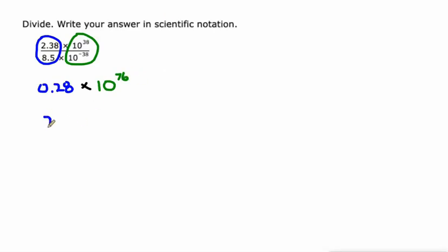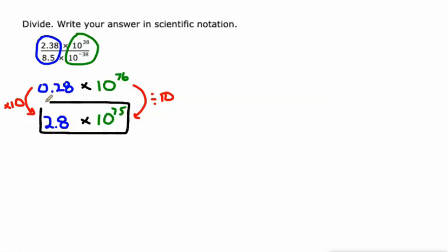Now, again, one more time. I want my answer in scientific notation. It's close to scientific notation, but not quite. So I'm just going to multiply that first factor by 10 to make it so it's between 1 and 10. And just like we've done the last three times, I'm going to divide this by 10, which is going to make the power go down 1 from 76 to 75. So there we go. 2.8 times 10 to the 75th power. That's our answer in scientific notation.